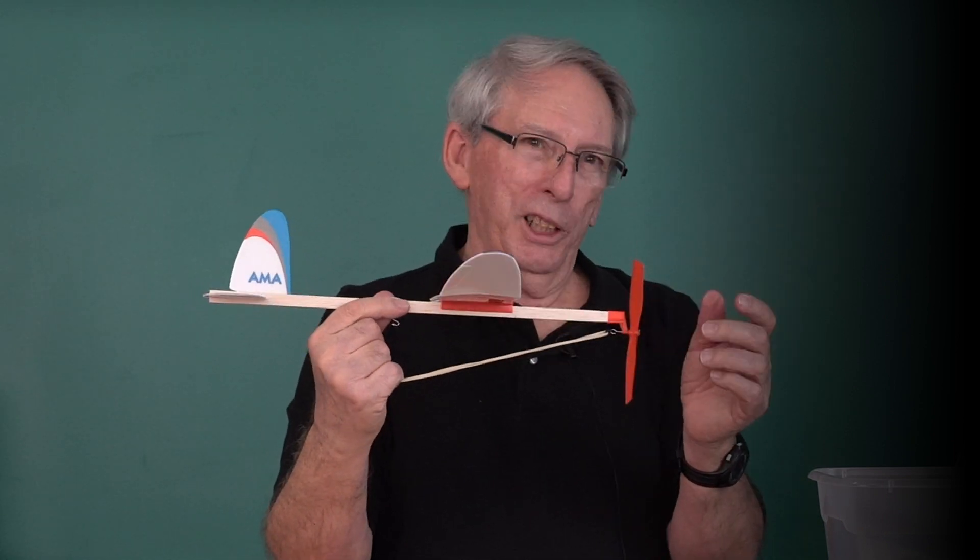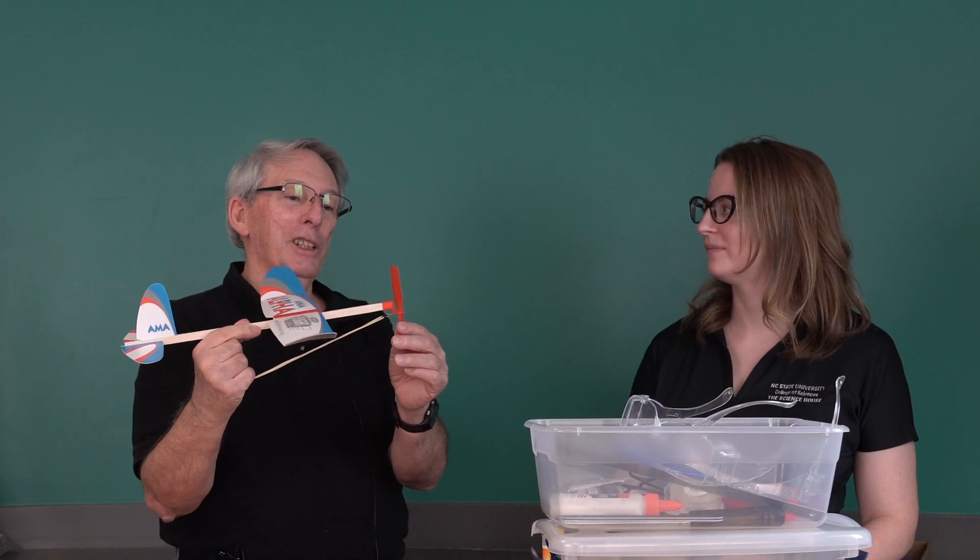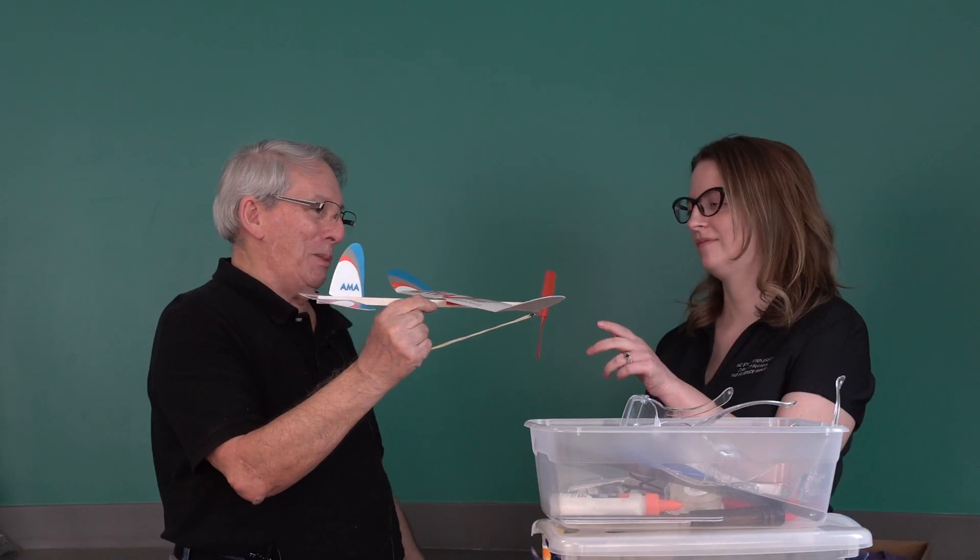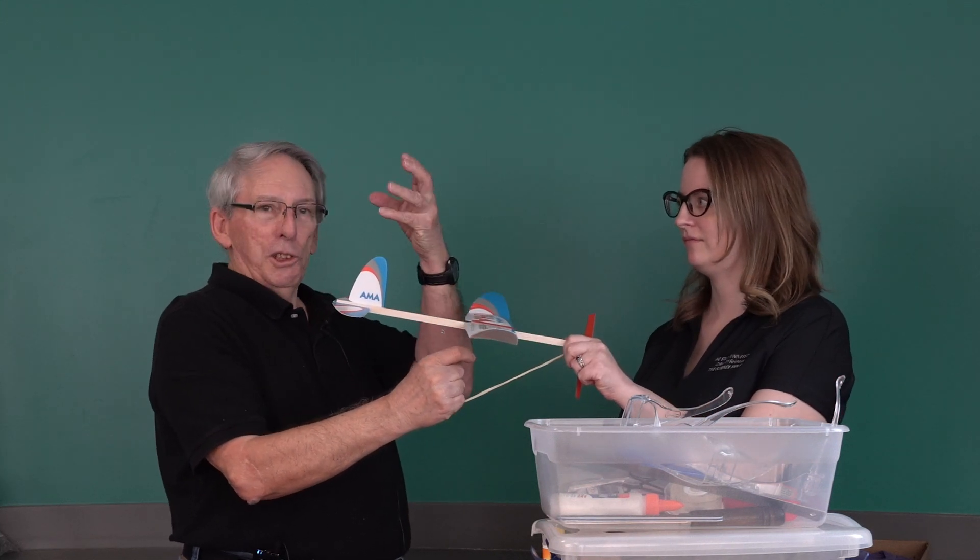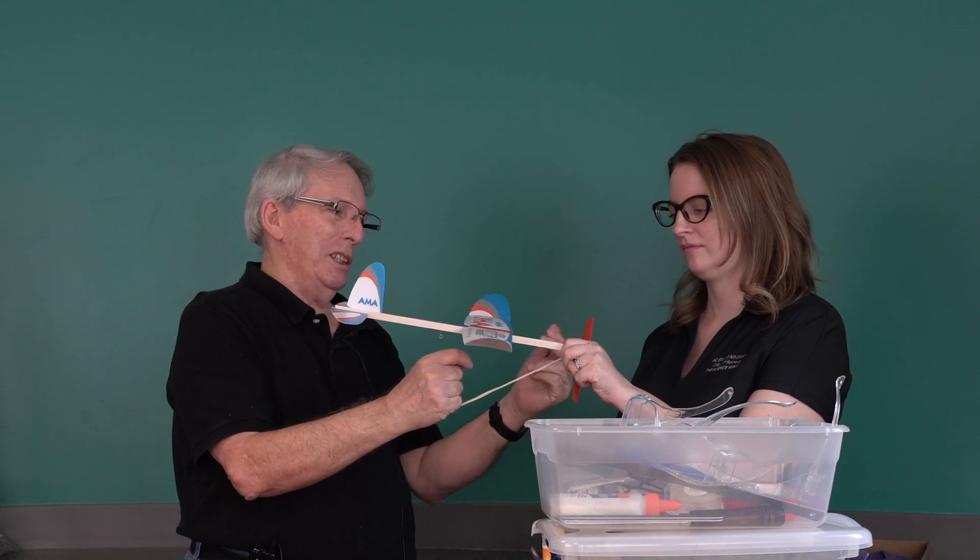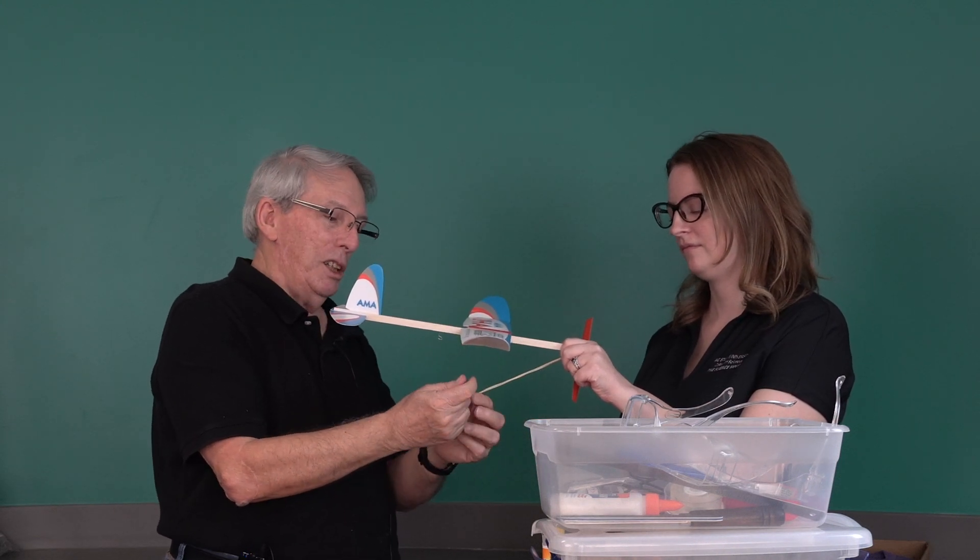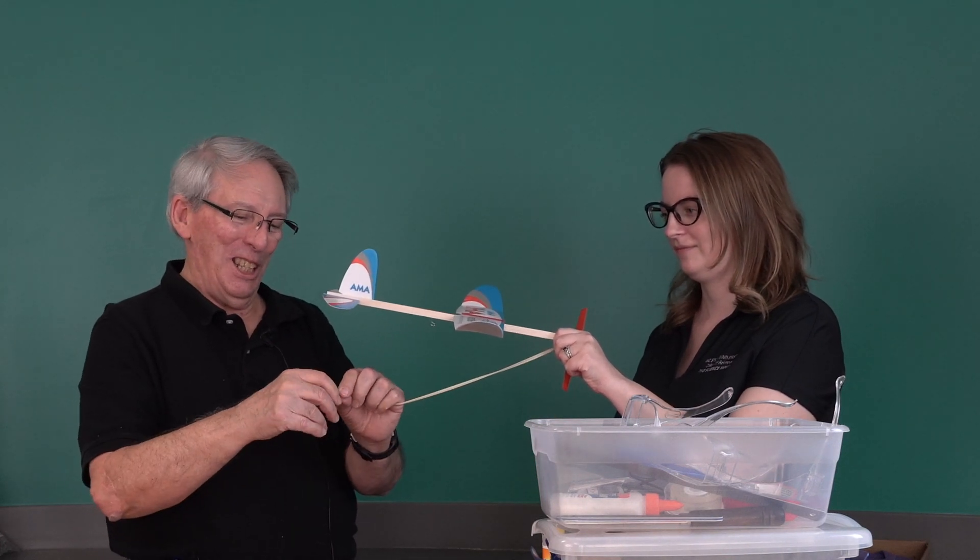However, since this is a team sport and you have two people on the team anyway, you have an assistant to hold the airplane. Just hold it, squeeze the front of the stick, capture the propeller inside your hand so it will not turn. Whoops, I told you I couldn't hold it on to anything.